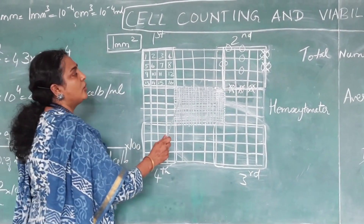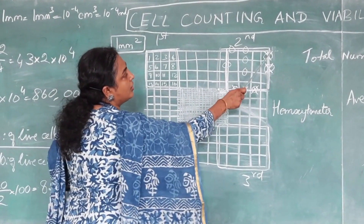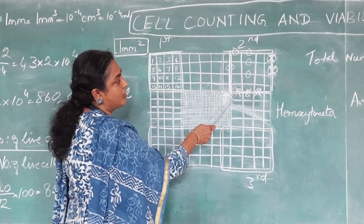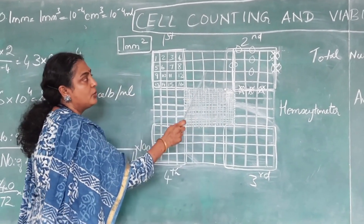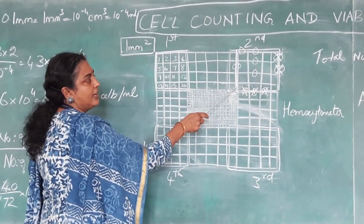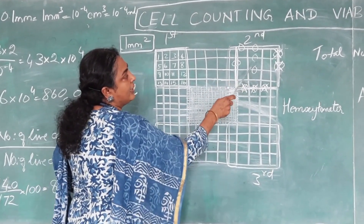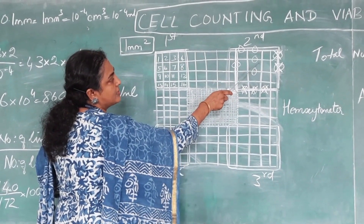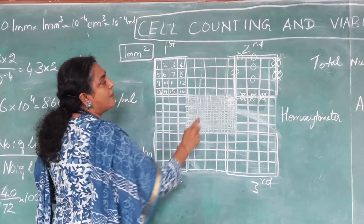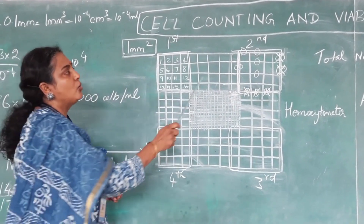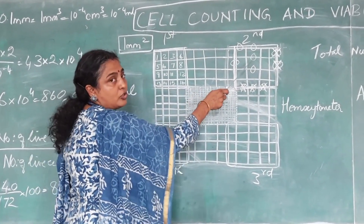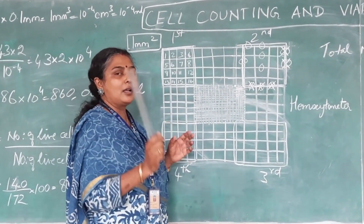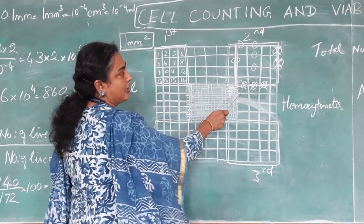When counting cells, make sure you do not count cells on the right side or at the bottom of the corner square. You should only count cells on the left and on the top. If a cell is on the boundary between two adjacent squares, count it in only one of the squares, not both. This ensures an accurate cell count.